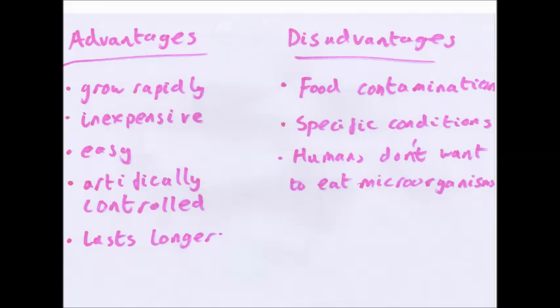There are also disadvantages. It is very easy for food contamination to occur — it takes just one different bacterium to get in and it will take over the whole vat, reproducing very quickly in the good conditions. This can cause food to spoil or even cause food poisoning. Also, while conditions to grow microorganisms can be simple to create, small changes — a slight rise in pH or drop in temperature — can kill the microorganisms and you lose your yield. Many humans also don't particularly like the idea of eating microorganisms.